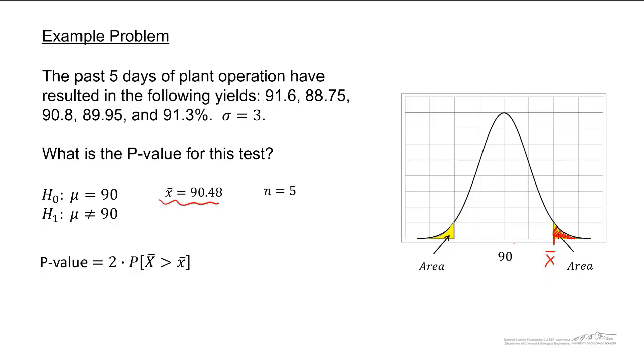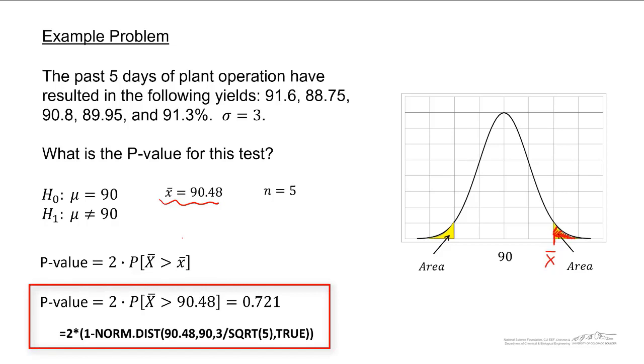If our sample average had been on the left side of the mean, then we would do two times the probability that x-bar is less than x-bar. We can calculate this using the norm.dist function in Excel and the p-value ends up being 0.721. So this is not to scale, but really if it were to scale, our p-value is going to be everything to the right of 90.48, but then we double that because technically p-value you have to account for both sides of the distribution.